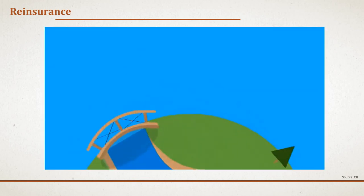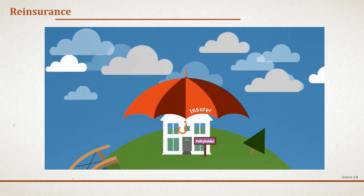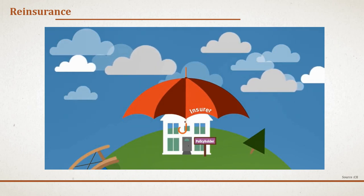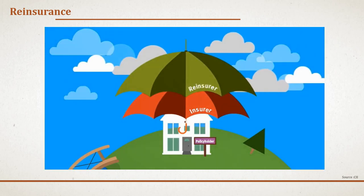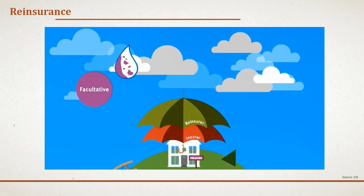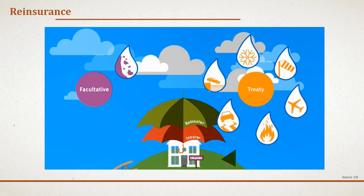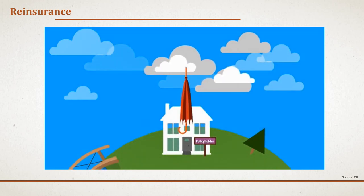When an insurer is offered a very large or very hazardous risk, they may feel it puts their own pool of money in jeopardy. When this happens, they can transfer the risk in exactly the same way individuals and companies do — through reinsurance. Essentially, reinsurance is insurance for insurers. Broadly speaking there are two types: facultative, where reinsurance is arranged for a single known risk, and treaty, where reinsurance is arranged for a collection of risks that fall within given criteria.